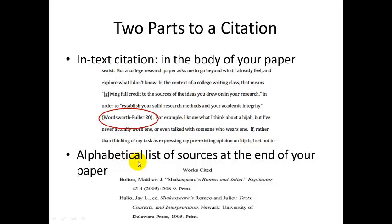The other part of a citation in both MLA and APA style is the end-text citation. This is an alphabetical list of sources that appears at the end of your paper. In MLA, it's called a works cited page. In APA, it's called a references page. In both cases, it basically explains all the information you need to be able to locate the source again. So in the in-text citation, you just include enough information to allow your reader to find the source in your end-text citation, which directs them to the title of the book or journal article, the date it was published, the publication company, and all that other information.